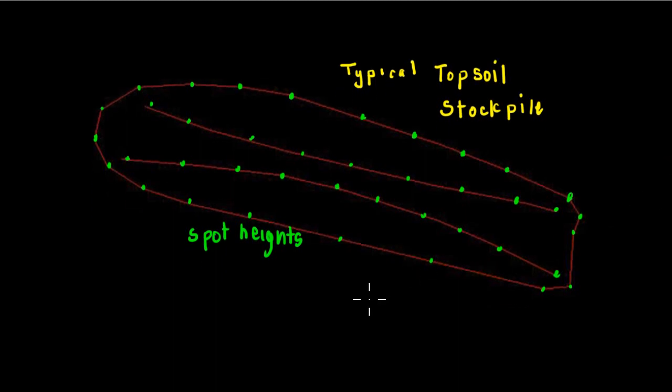Usually where the motor scraper or suchlike has run across and deposited the topsoil, generally in layers not too high. Now we've gone out with our survey equipment and measured a series of spot heights, firstly around the base of the stockpile and then across the top.